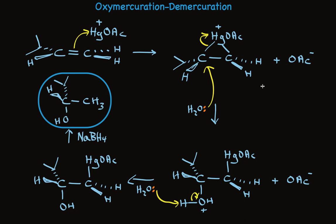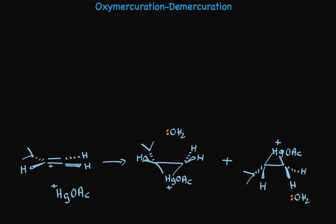I've drawn one enantiomer. In fact, the mechanism written here forms only one enantiomer. But we're starting with an optically inactive reactant, so we need to have an optically inactive set of products — we make both enantiomers. The pi bond electrons can react from the lower side to form a bond with the mercury, or from the upper side to form a bond with mercury, and this is what leads to the formation of two enantiomers.